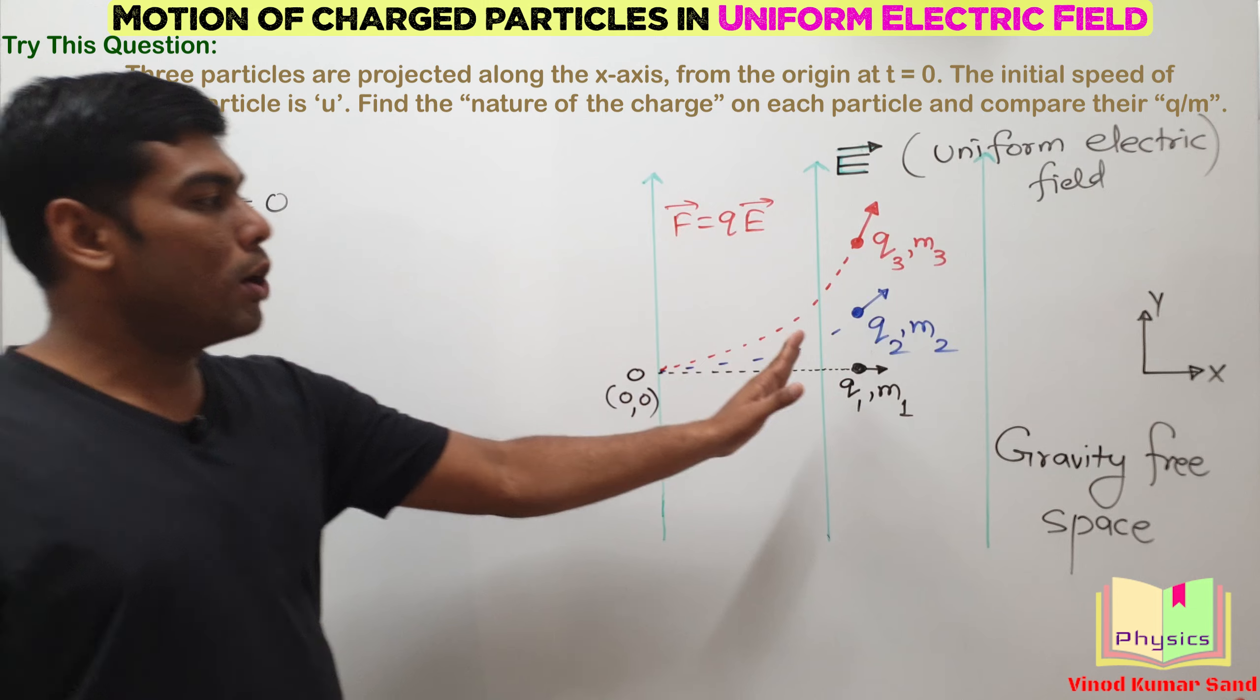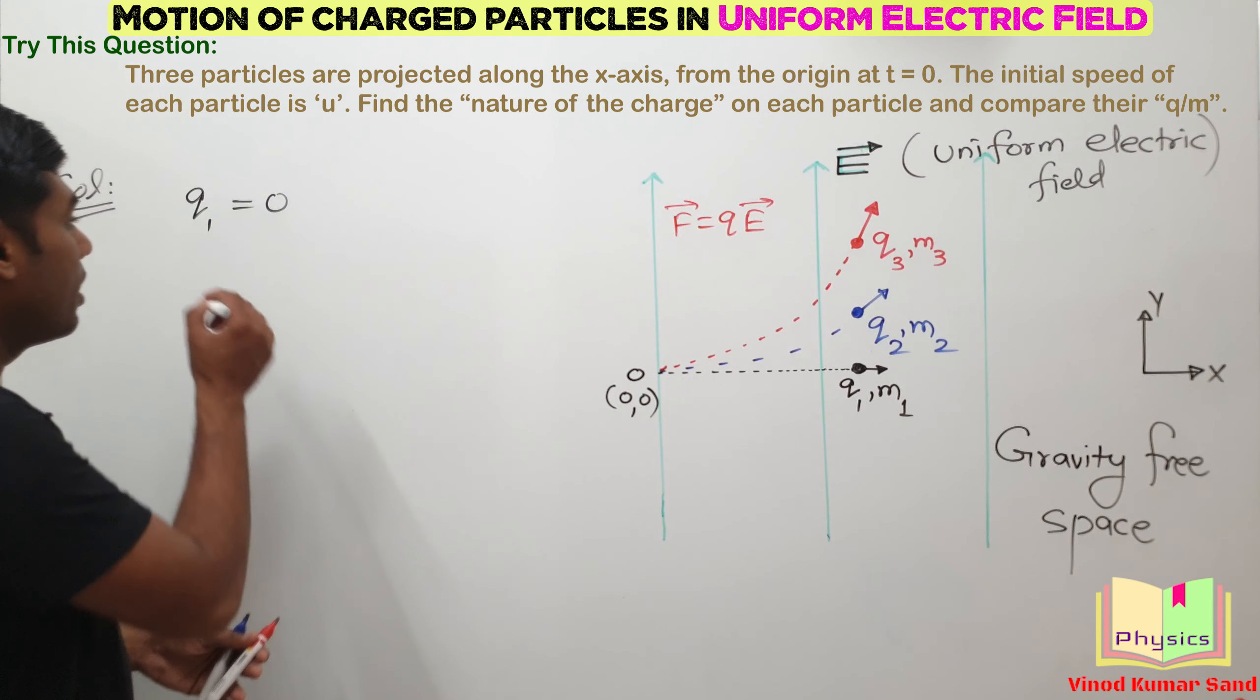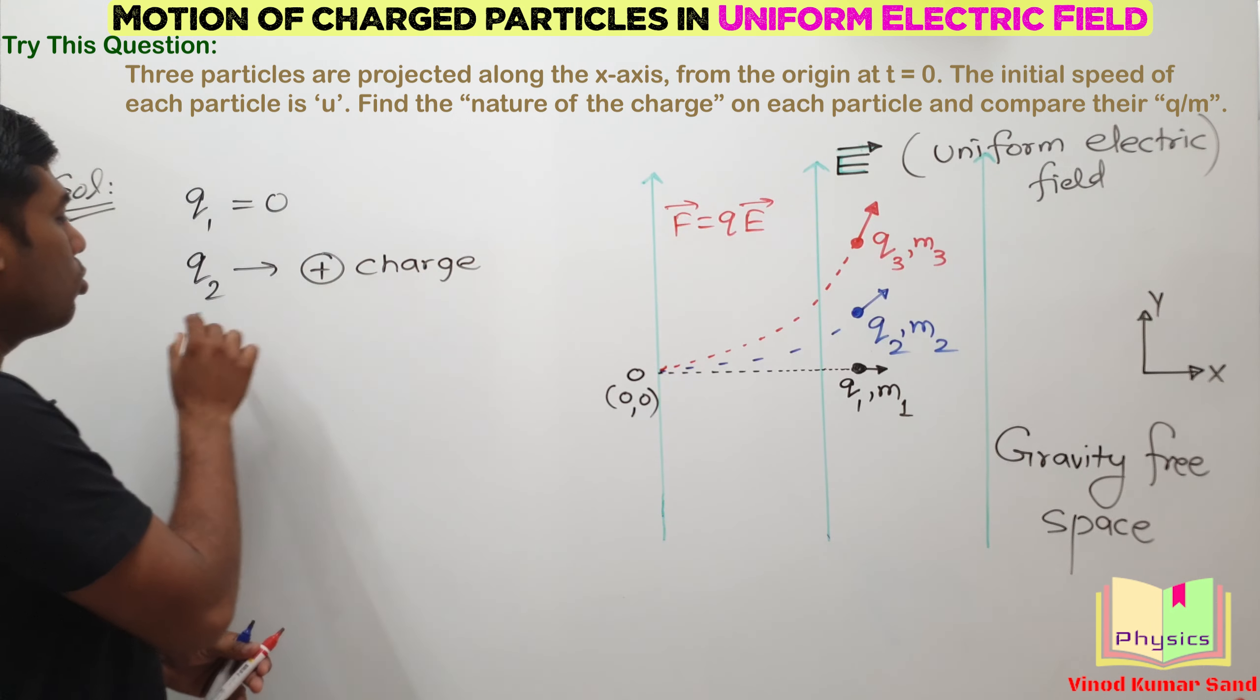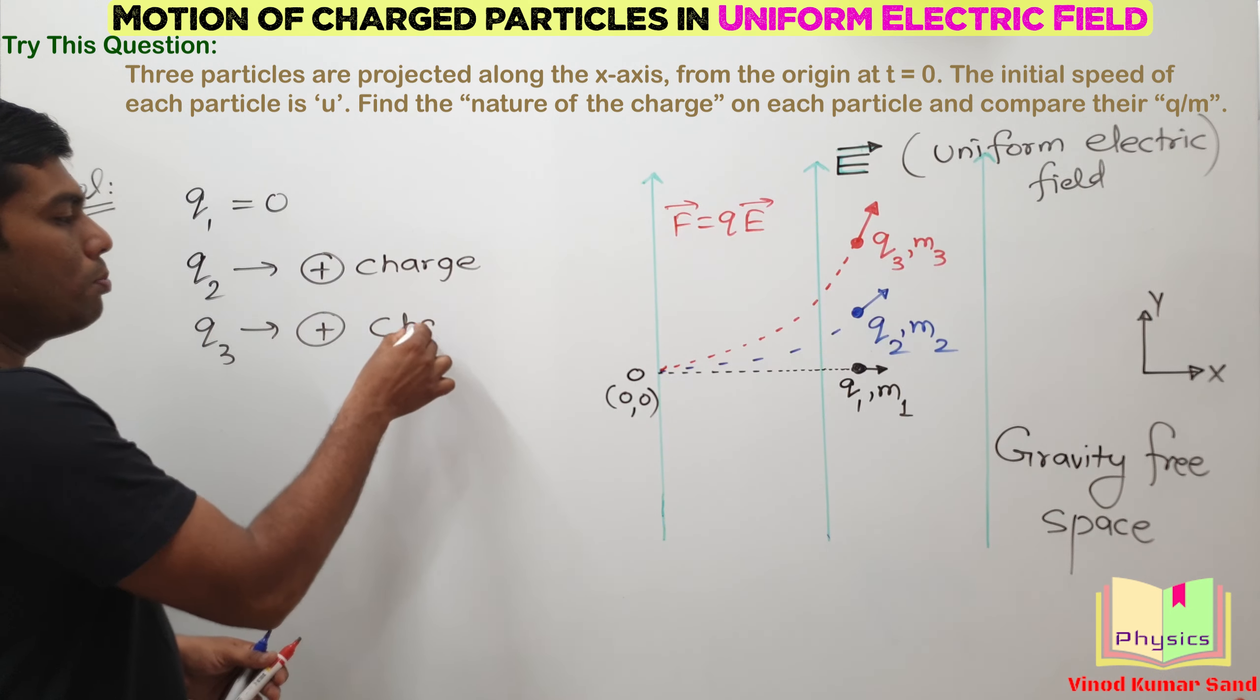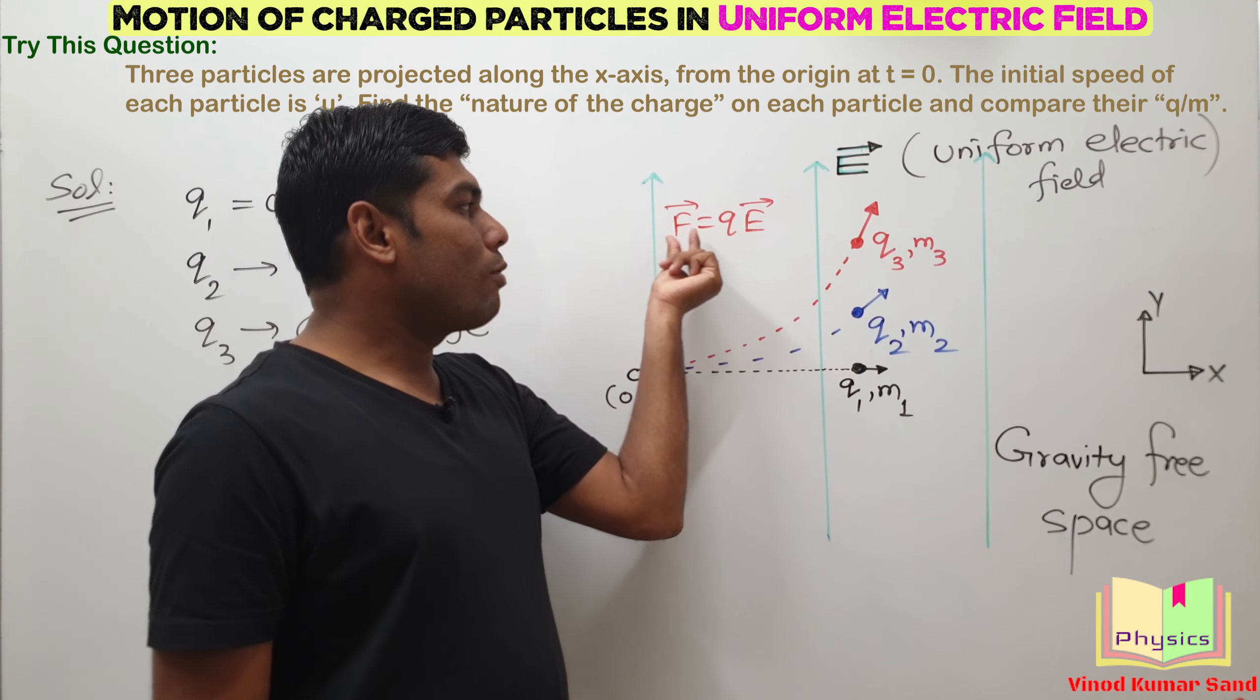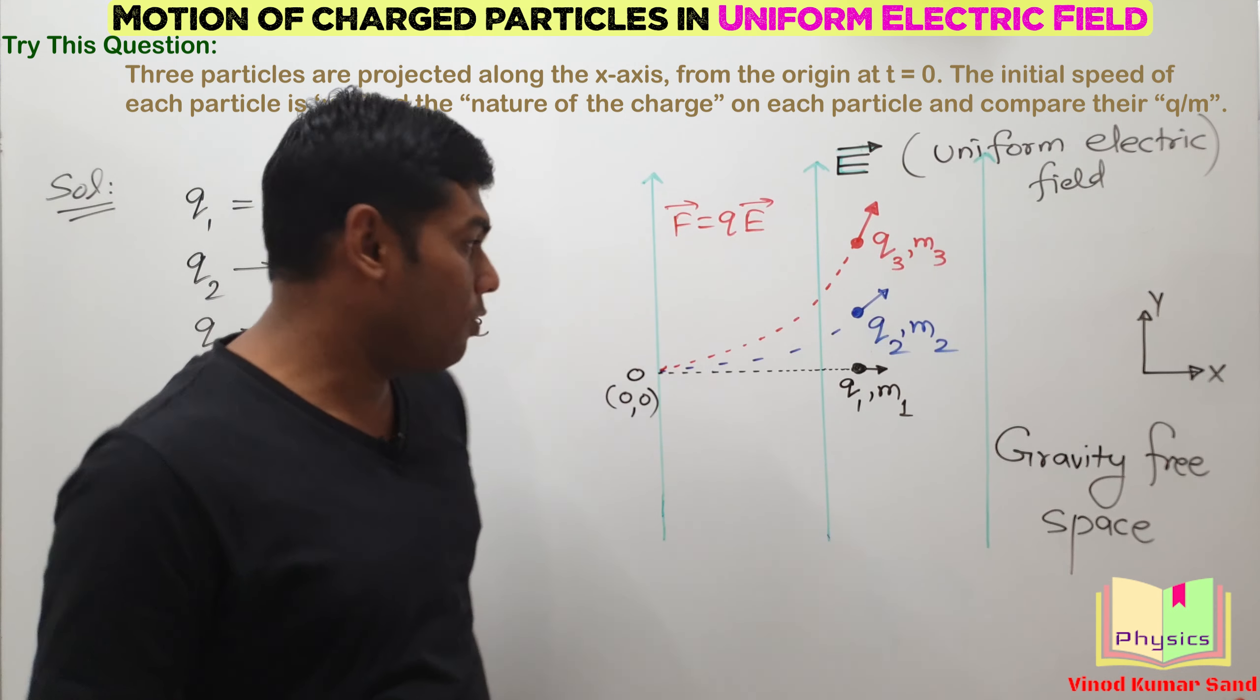Now for Q2 and Q3, the force is in the direction of electric field. It means Q2 is a positive charge as well as Q3 is also a positive charge. They are experiencing the force along the electric field. Whenever the charge is positive, then force experienced by the charge is in the direction of the electric field.